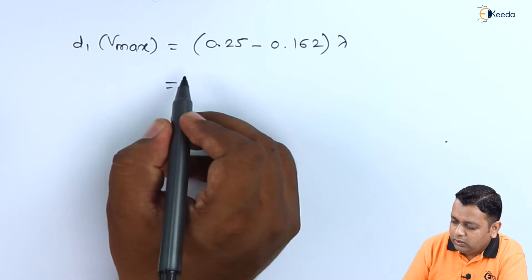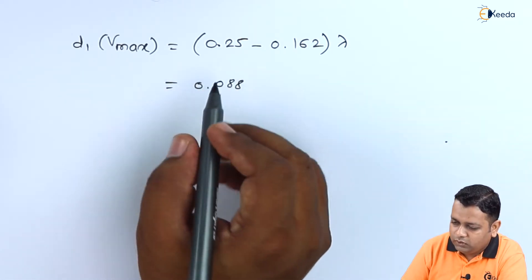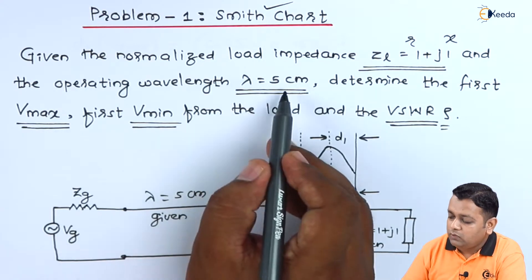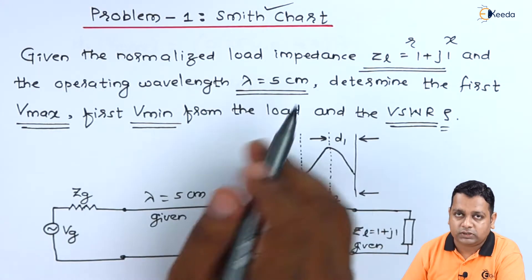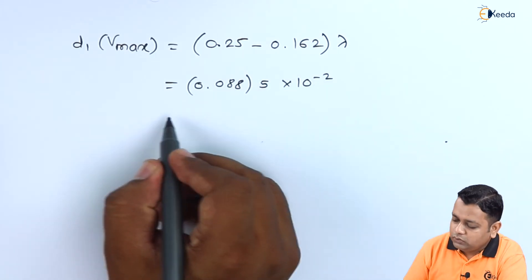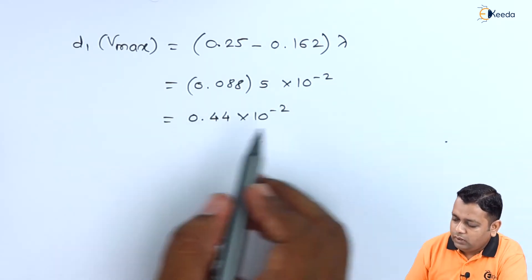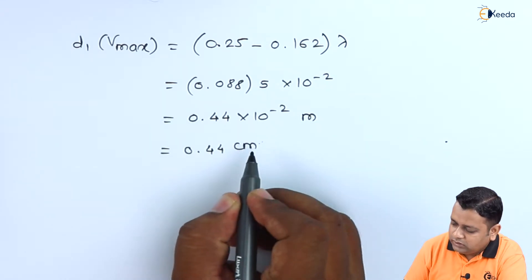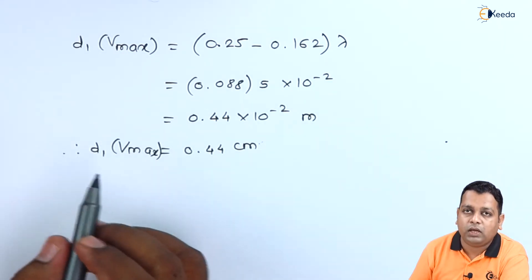So the difference is 0.088 times lambda. As the lambda value is provided in the problem statement — lambda equals 5 centimeters, that is 5 times 10 to the power minus 2 meters — this gives us 0.088 times 5 times 10 to the power minus 2, which equals 0.44 times 10 to the power minus 2 meters, or 0.44 centimeters as the distance of the first maximum.